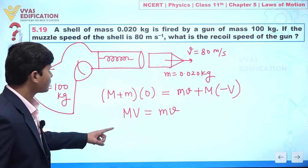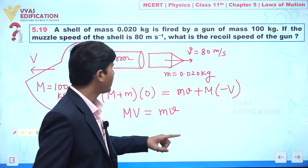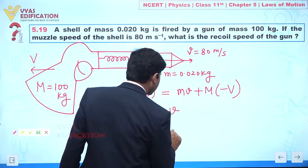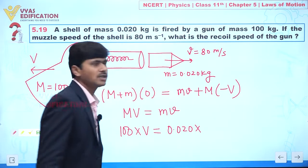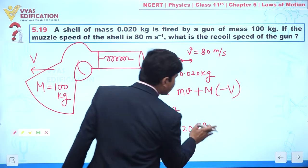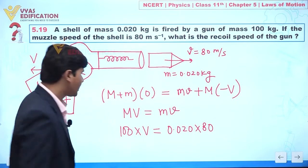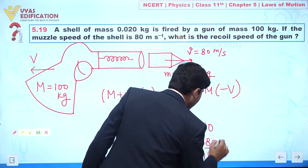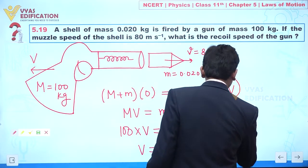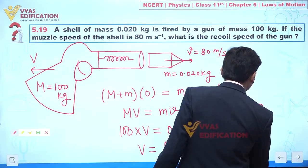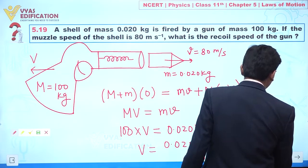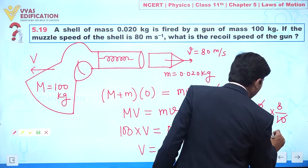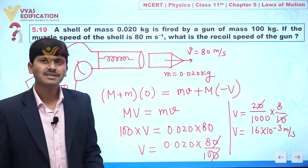So we get: capital M × V = small m × v. Substituting values: 100 × V = 0.020 × 80. Therefore V = (0.020 × 80) / 100 = 1.6 / 100 = 16 × 10⁻³ meters per second.